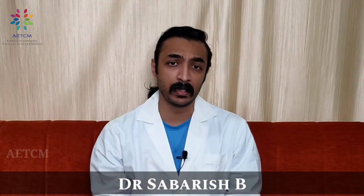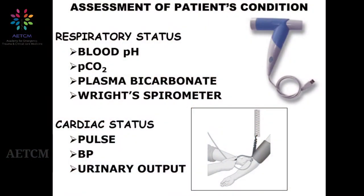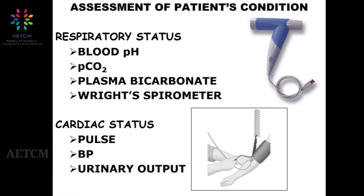Moving on to further assessments, you have to assess the respiratory system. The adjuvants include measurement of blood pH, pCO2 level, and bicarbonate level — all obtained from blood gas analysis. A bedside spirometer can also be used. For cardiac status, the key parameters assessed are the patient's pulse, blood pressure, and urinary output.